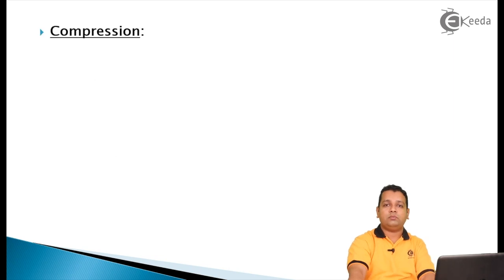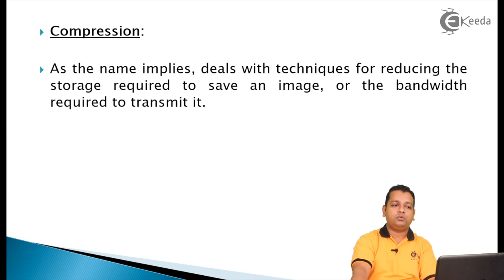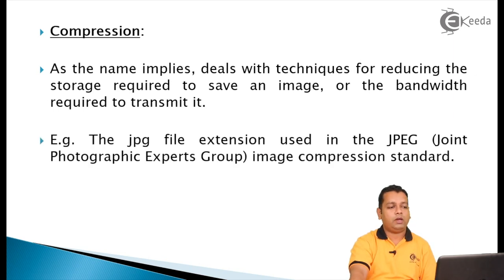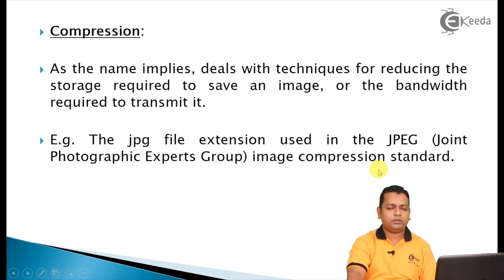After wavelets and multi-resolution processing, the next fundamental step is image compression. As the name implies, it deals with techniques for reducing the storage required to save an image or the bandwidth required to transmit it. For example, the .jpg file extension stands for the Joint Photographic Experts Group image compression standard.